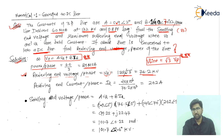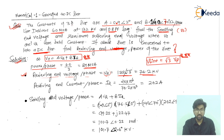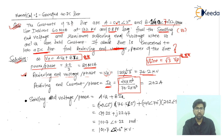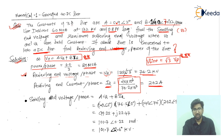The receiving end current IR is also found as a per-phase value. IR = (20 × 10⁶) / VR per phase, and when we calculate this we get 262 amperes.